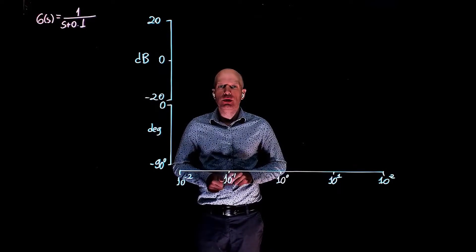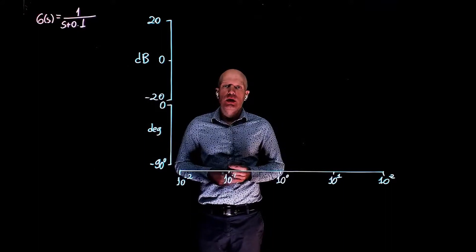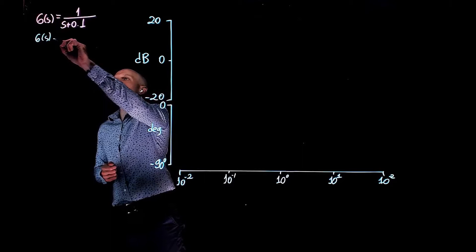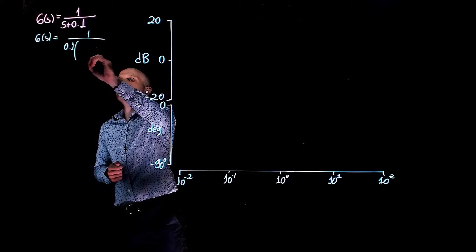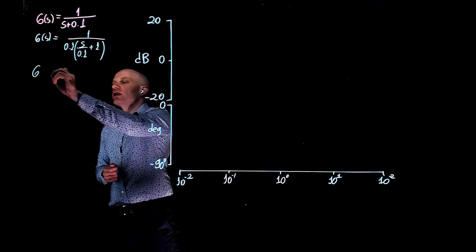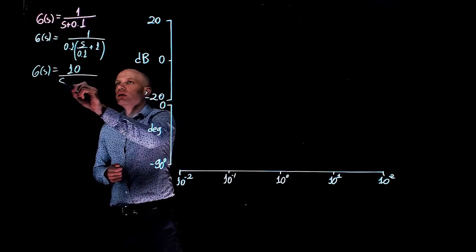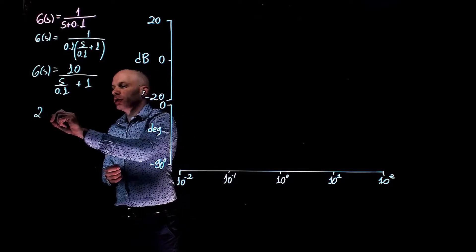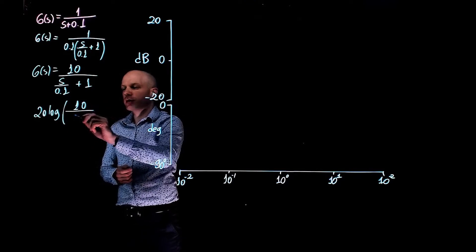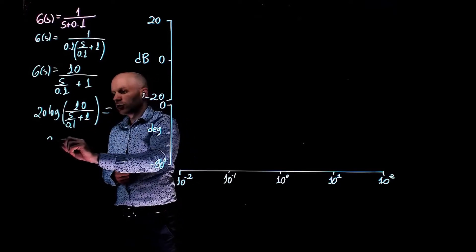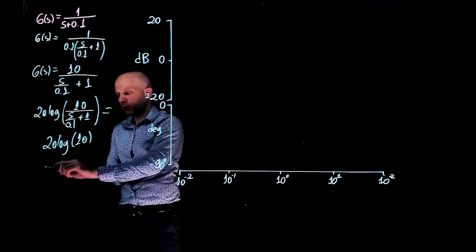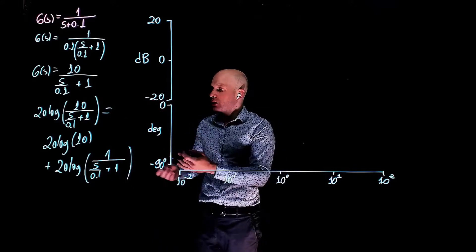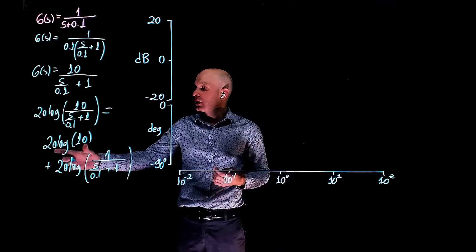In this second example, the transfer function you're looking to draw the Bode plot for is 1 over s plus 0.1. Let's start by writing this transfer function in the standard form we need for Bode plots — that is, we need s plus 1. This can be rewritten as 1 over, factoring out 0.1: s over 0.1 plus 1, so g(s) equals 10 over (s over 0.1 plus 1). This means we can split this Bode plot into two building blocks: a constant gain and a real pole.